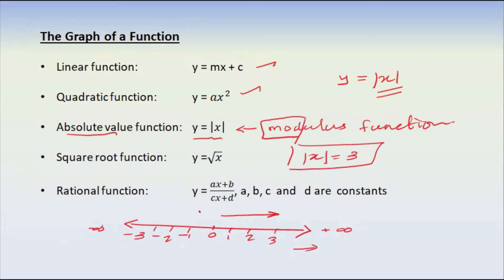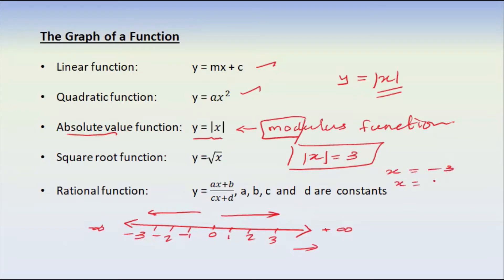3t becomes 8, so this will be minus 3. This means 3t becomes 9, so this is 8 plus 3. So we're going to 6. Minus 3 equals 9, and x times 5 equals 3.